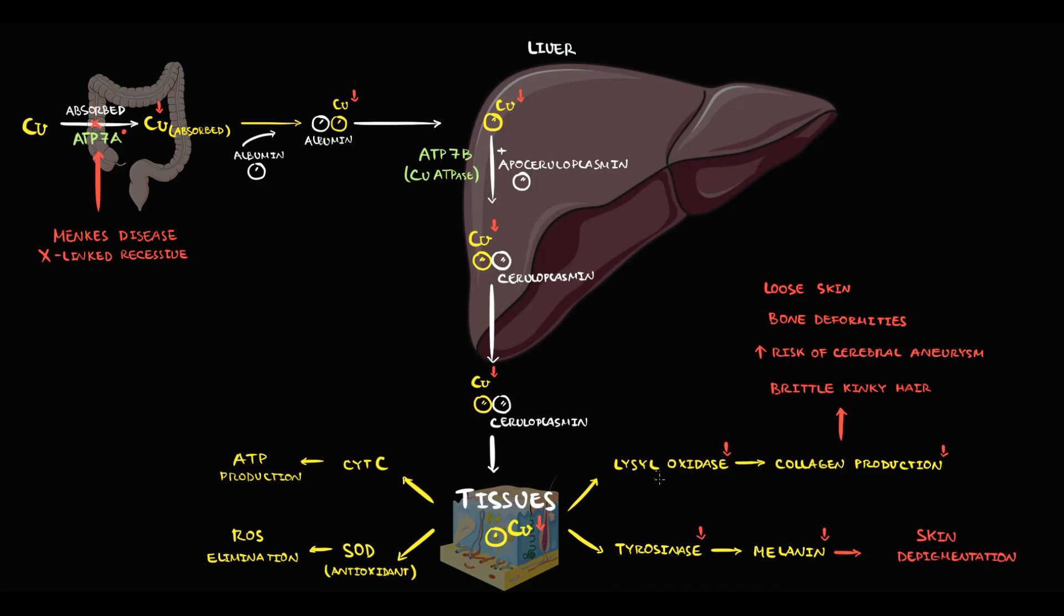Without copper, cytochrome c oxidase is not working. So energy production will decrease, and prolonged energy deficiency will cause growth and developmental delay, decreasing muscle tone, so-called hypotonia, and hypothermia.